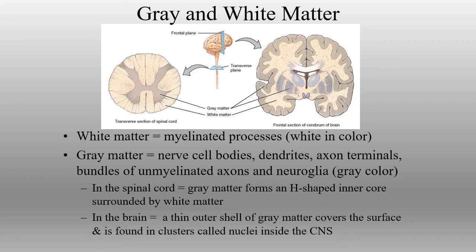The gray matter within the spinal cord makes up something of an H pattern — sometimes looking like a butterfly — on the inside. The white matter is all myelinated fibers, which makes it more white in coloration. The cortex of the brain makes up all of the gray matter. The brain has a large white matter connection called the corpus callosum, and the spinal cord has a gray matter connection called the gray commissure connecting the two halves.